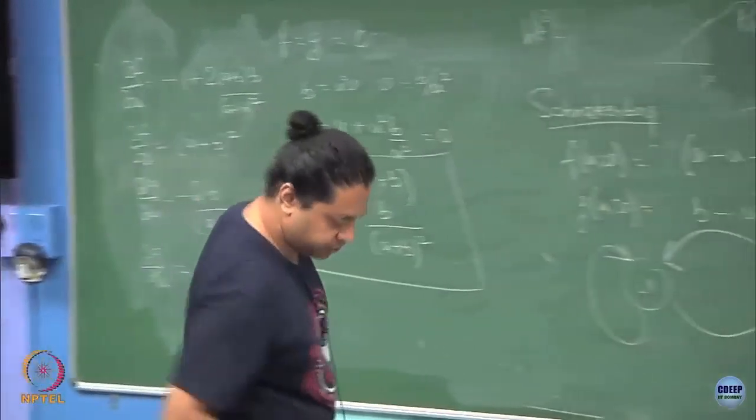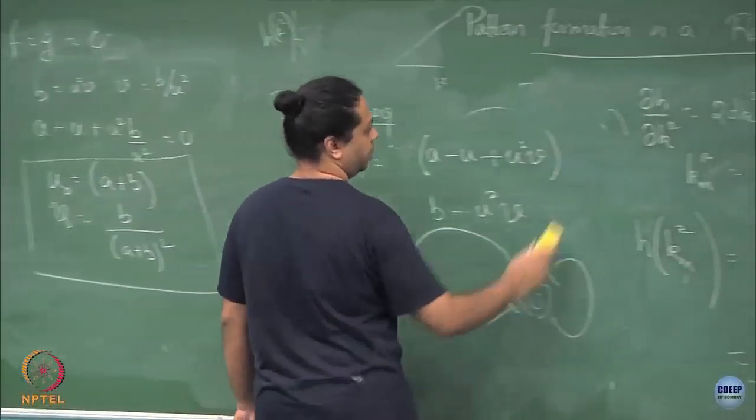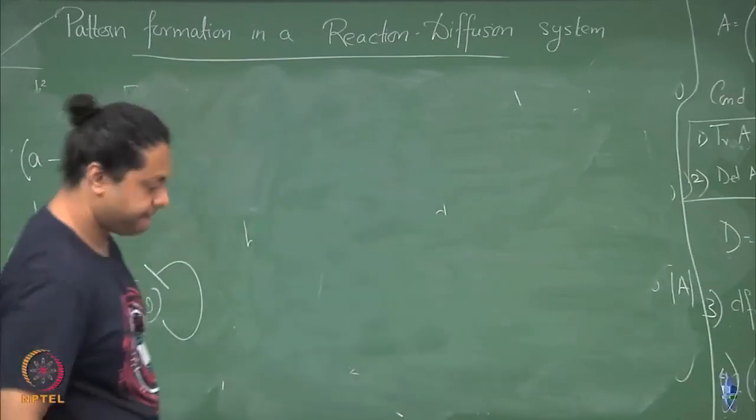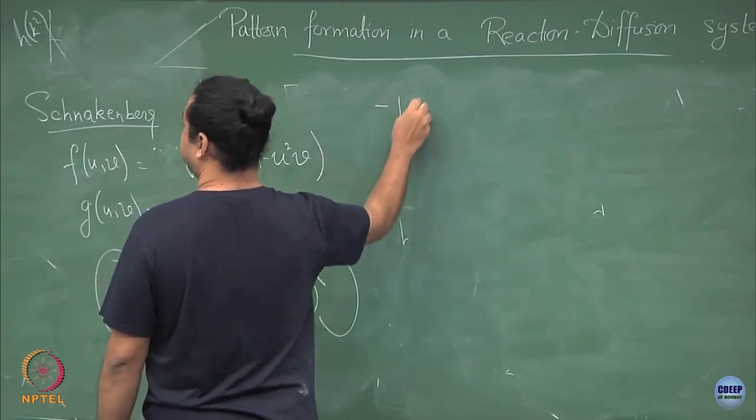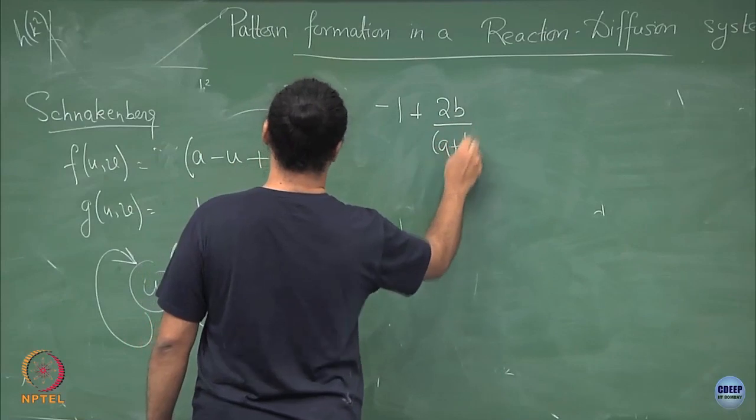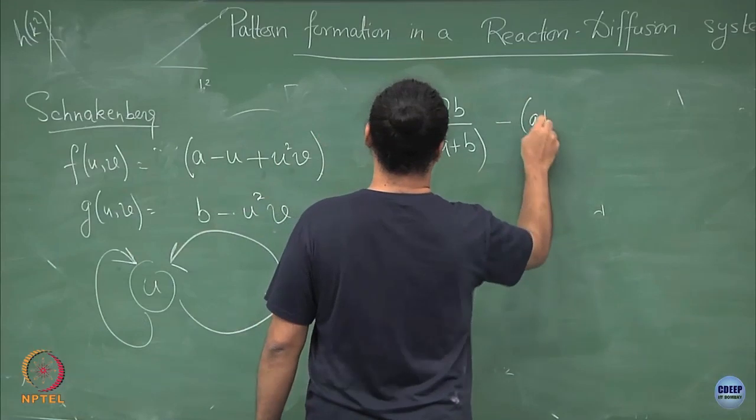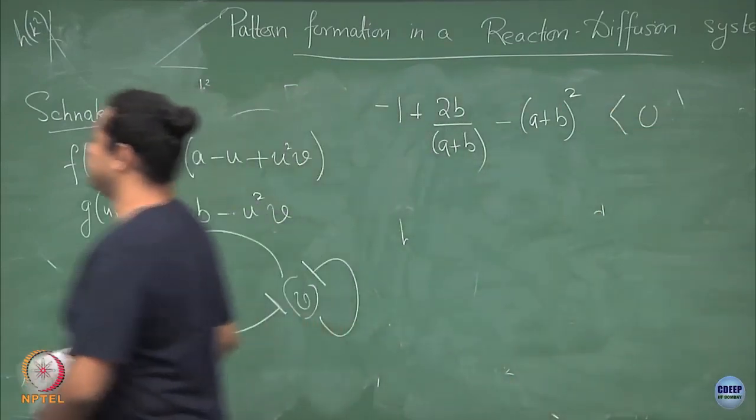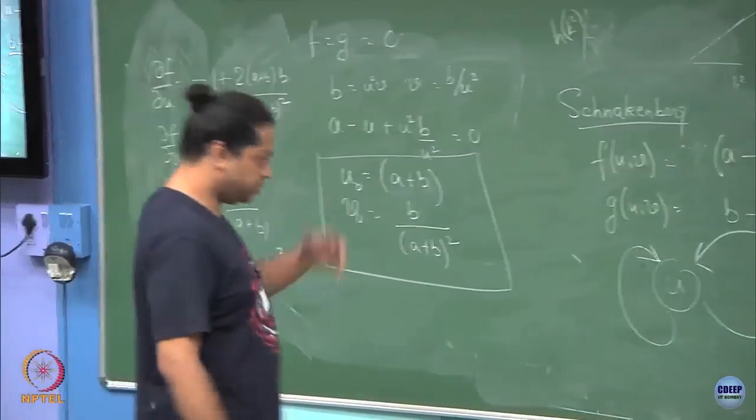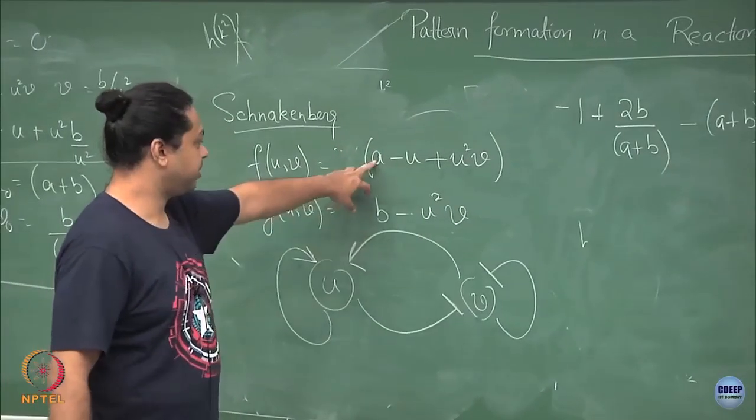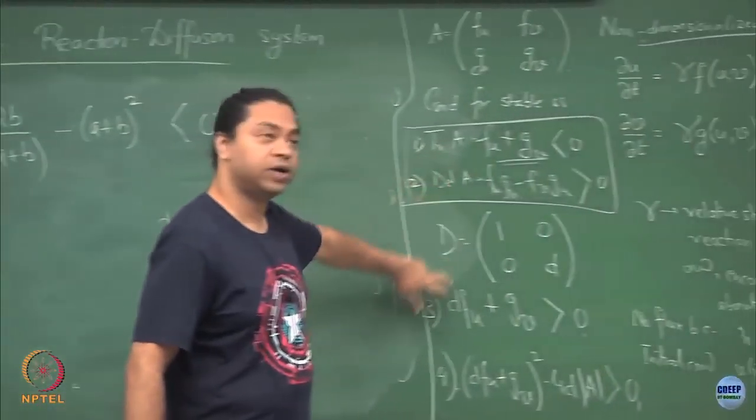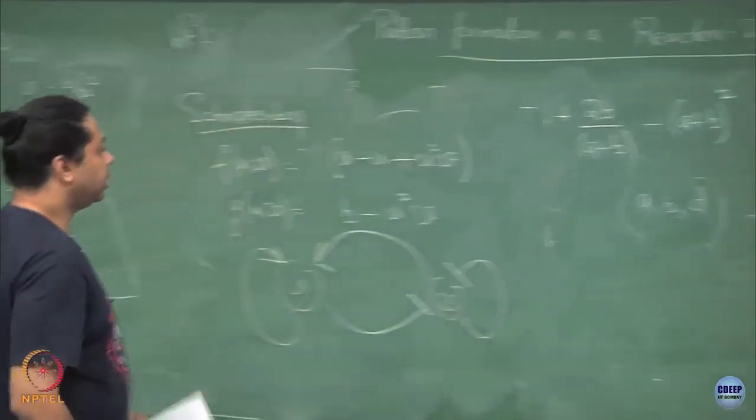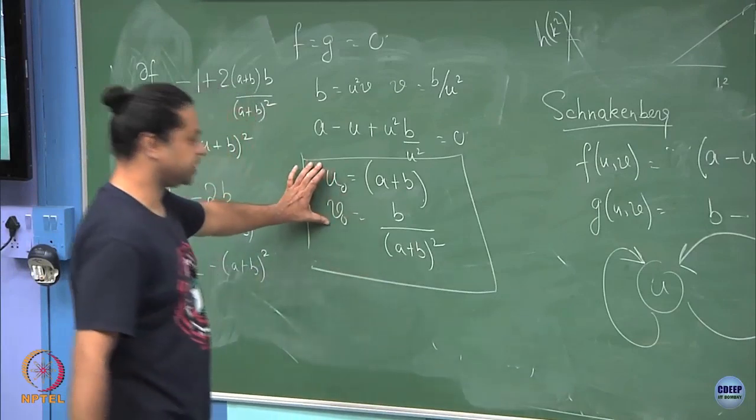What that condition means is that f_u plus g_v less than 0. f_u is minus 1 plus 2b by (a plus b), g_v is minus (a plus b) square, is less than 0. The point is that given this sort of equation which has two parameters a and b and this third parameter d, by applying these four conditions sequentially you can find out for what ranges of a, b, and this ratio of diffusion coefficients d you will have patterns that will destabilize the steady state u_naught, v_naught in the Schnakenberg kinetics.